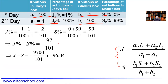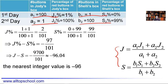Multiplying by 100 on both sides, J minus S equals negative 9700 over 101, which is approximately negative 96.04. Since we need an integer value, the least possible value of J minus S is negative 96. That's our answer — we're done.